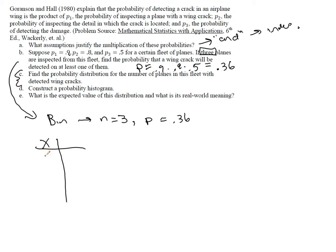So if three planes are inspected from this fleet, what is the probability that a wing crack will be detected on at least one of them? So that means that it's possible that none of the cracks are caught, one of the cracks is caught, two of them, or all three of the planes' cracks are caught. So we want to know the probability of each one of these.